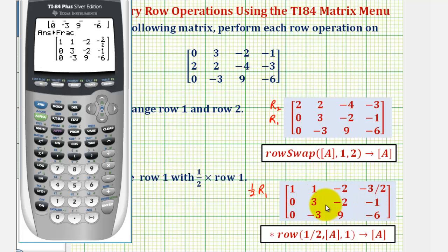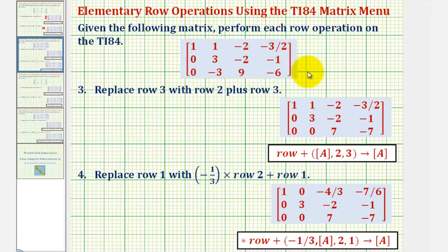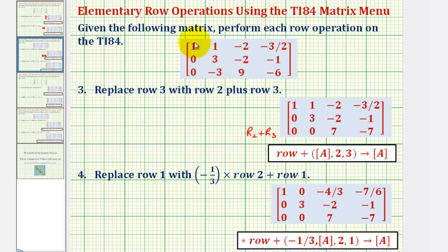So now we'll take this new matrix and perform two more row operations. Here's the same matrix from the previous step. We want to take this matrix and replace row three with row two plus row three. Notice how that would give us a zero in this entry. So our new row three is: zero plus zero, three plus negative three is zero, negative two plus nine is seven, negative one plus negative six is negative seven. Let's duplicate this on the TI-84.